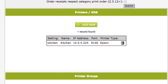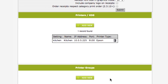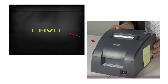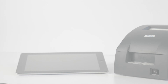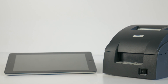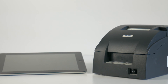The printer now shows in the printer list as a kitchen printer. The Lavu application is configured to recognize the TM U220B as a device for printing order items sent to the kitchen. The next segment will show how to confirm that the application on the iPad can connect and print to this printer.